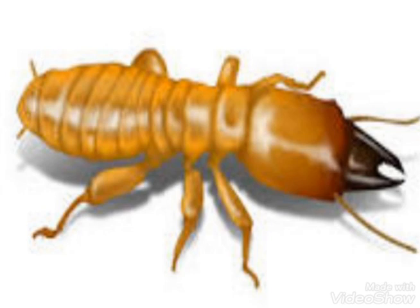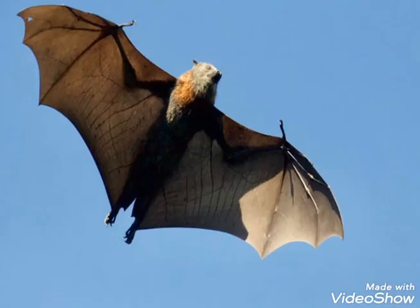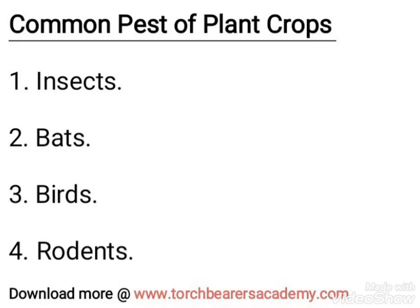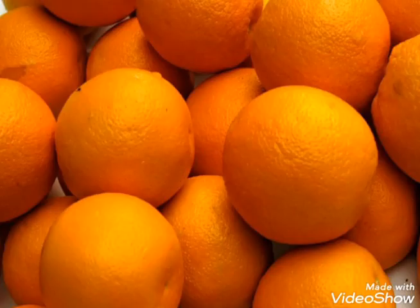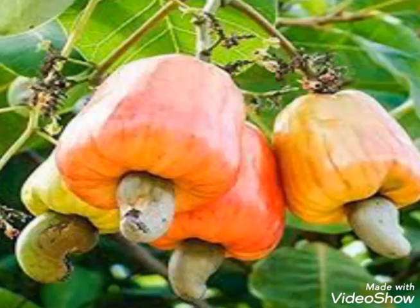That is, reduced growth and development. Number two, bats. Bats are animals that are active at night. As a result, they are referred to as nocturnal animals. They feed on fruits of plants such as mangoes, oranges, guavas, cashews, amongst others.